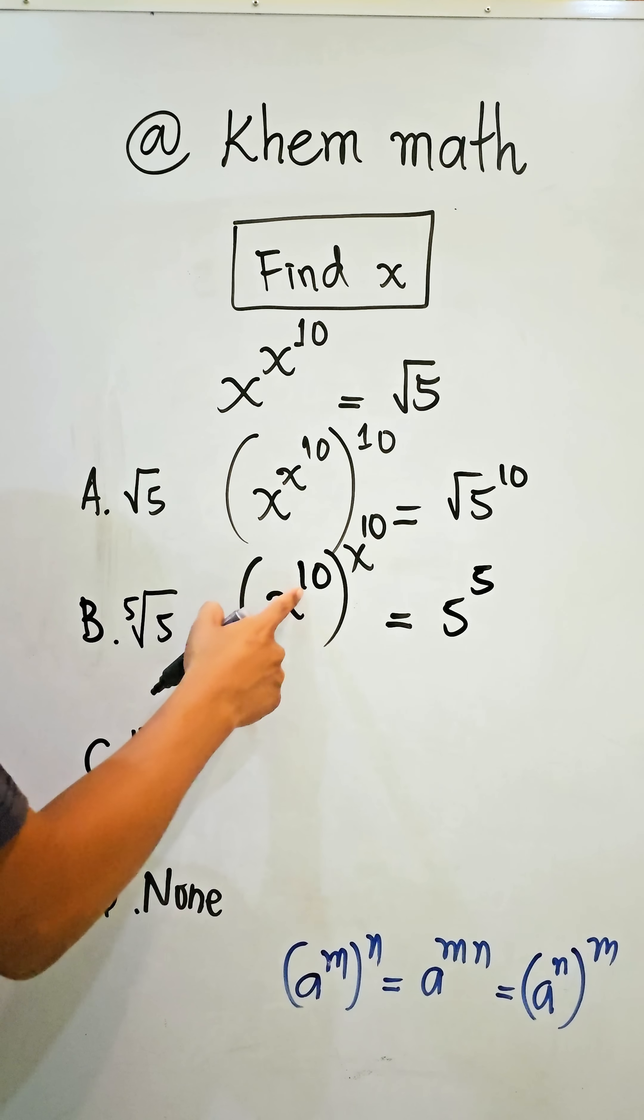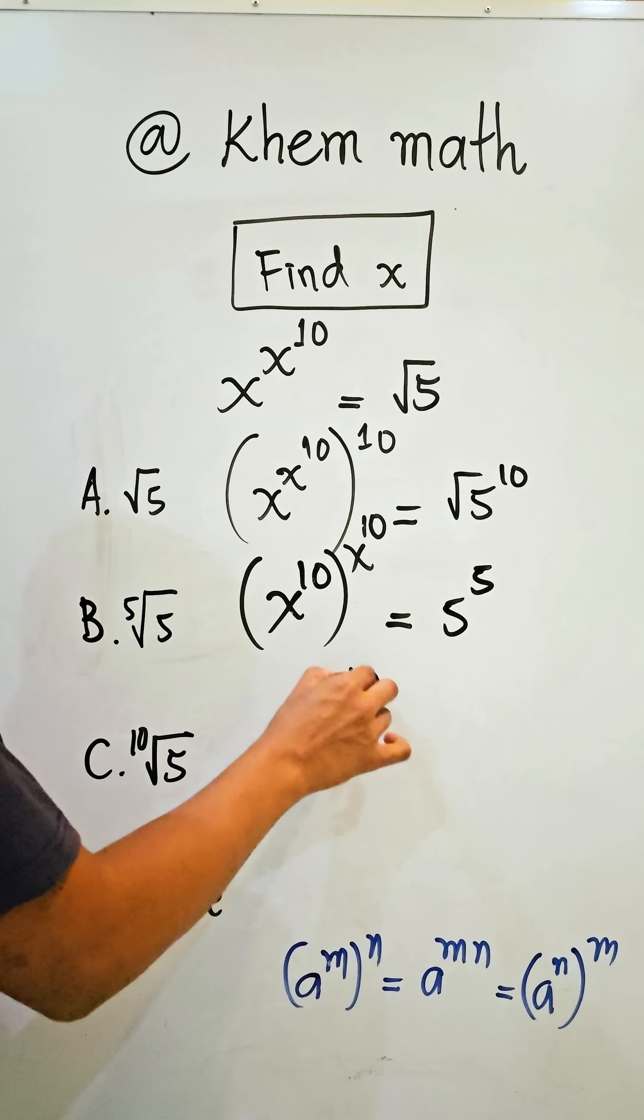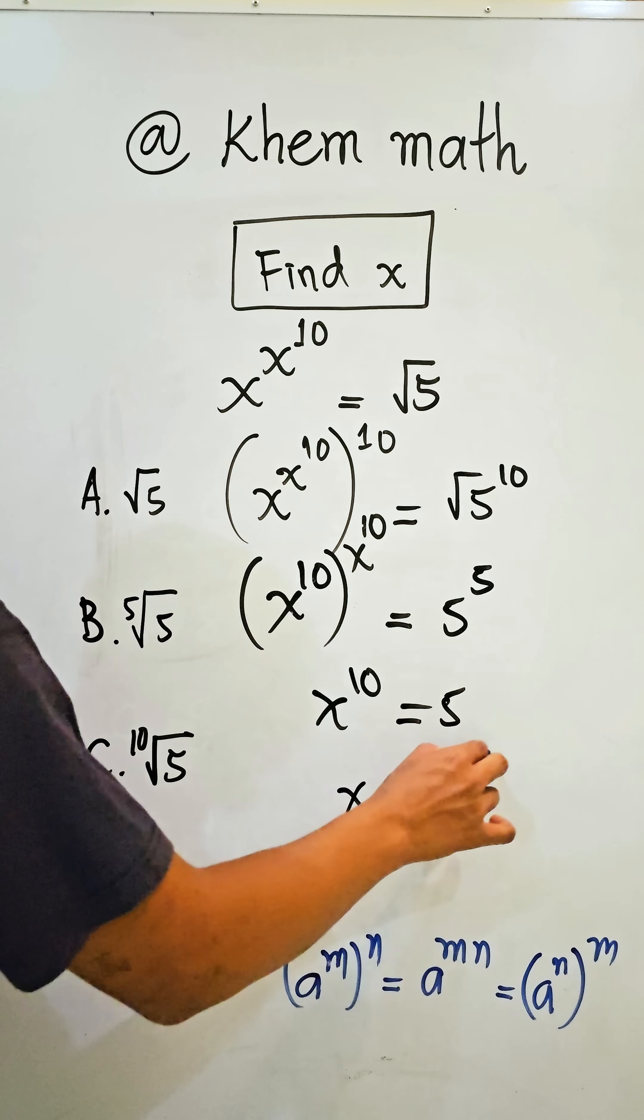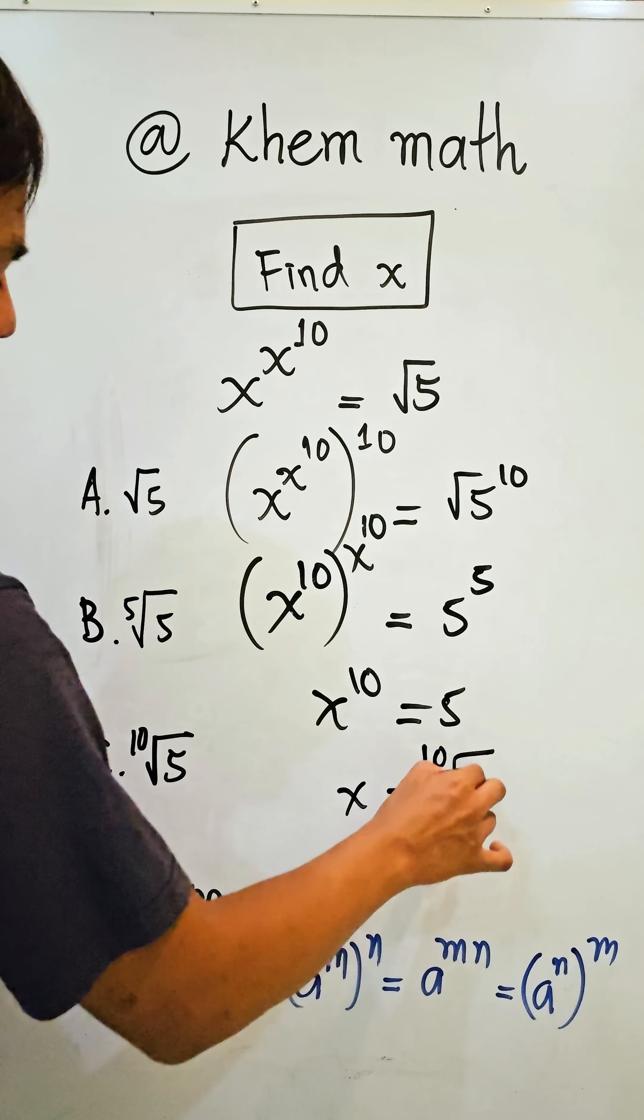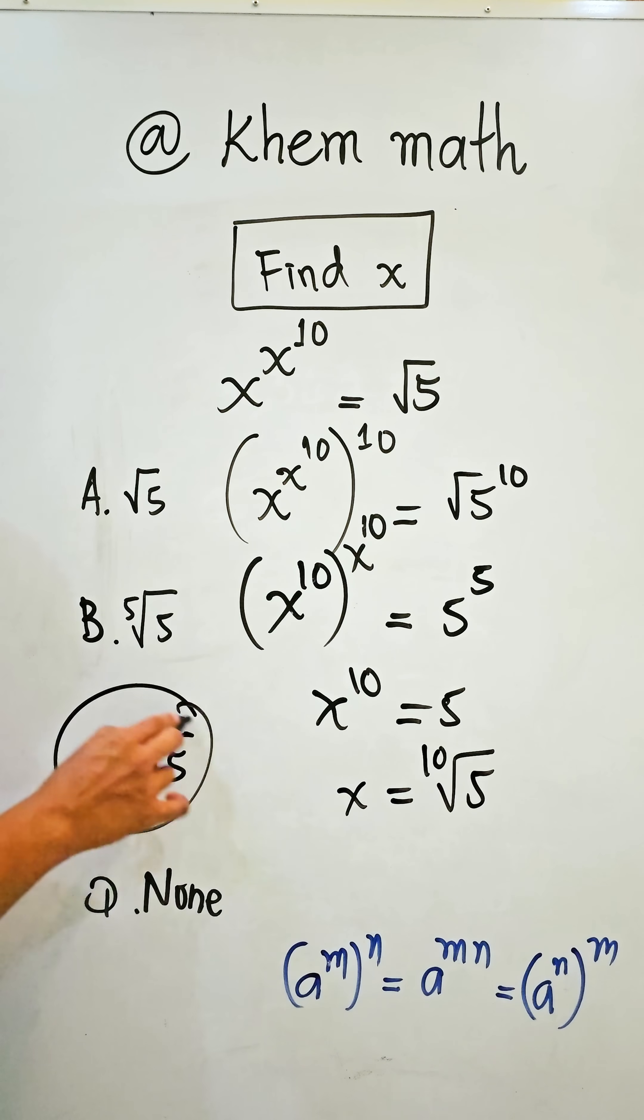So we get x to the power of 10, and here x to the power of 10, and here 5 to the power of 5. So we get x to the power of 10 equals 5. So we get x is equal to the tenth root of 5. So our answer is C.